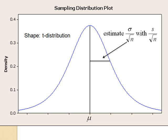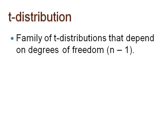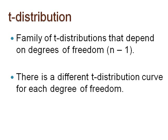Because of this new variability, the sampling distribution of sample means has a t-distribution, and this t-distribution depends on the sample size of the sample taken to calculate the sample mean and standard deviation. Actually, there are a family of t-distributions that depend on degrees of freedom. This means there is a different t-distribution curve for each degree of freedom. When estimating one population mean, the degrees of freedom are n minus 1, as we stated earlier.